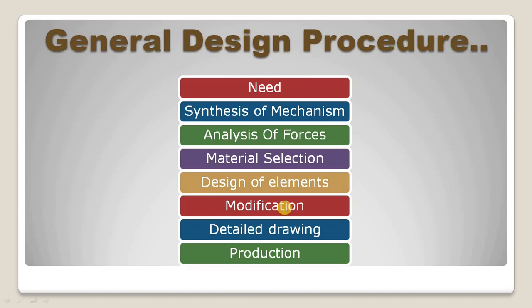The modification — whatever mistake is done by the design engineer — is corrected by the senior design engineer at this stage. This is nothing but the modification. After that, detailed drawing: whatever is designed by the design engineer is placed in terms of a detailed drawing, and this detailed drawing is forwarded to the production department so that the production process will start. This is the general design procedure which is followed in industry or a company.